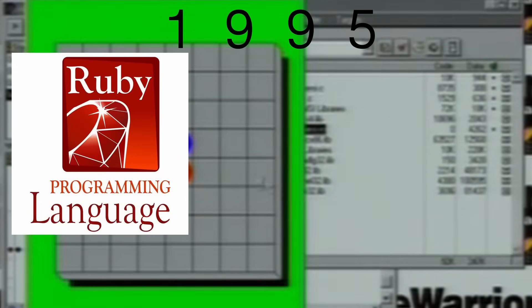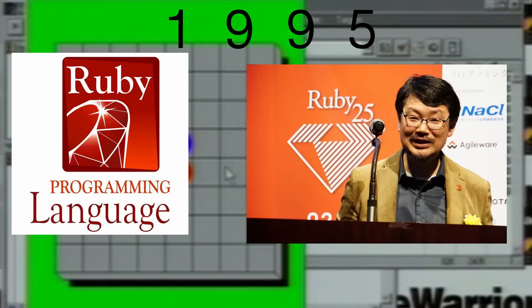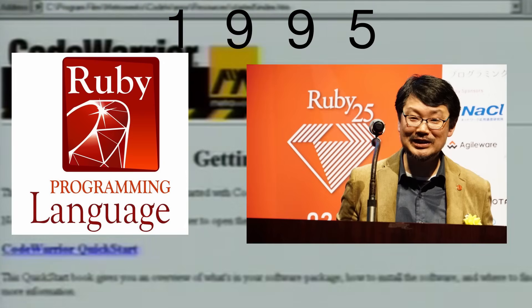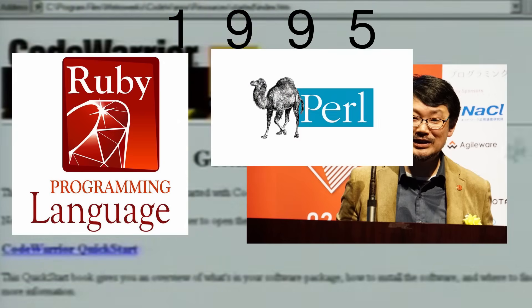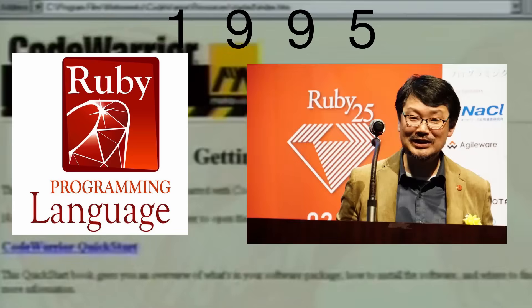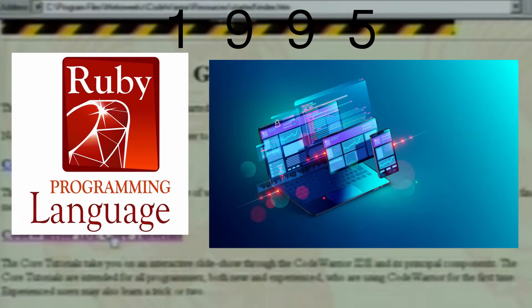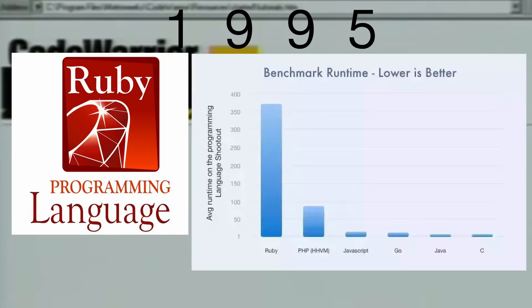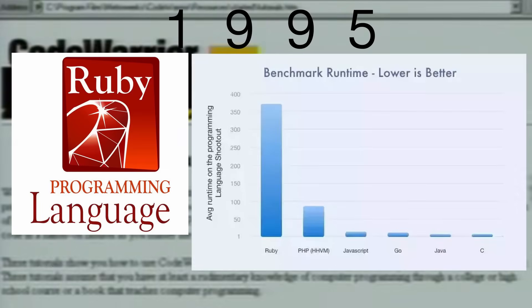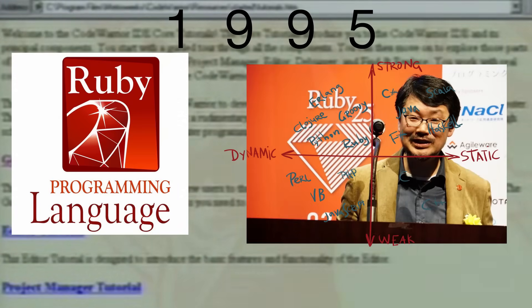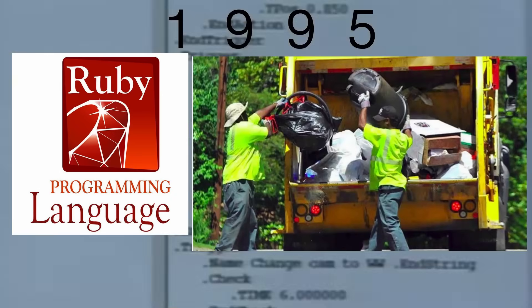Next on the 1995 train is Ruby, created by Yukihiro Matsumoto. Ruby combines Matsumoto's favorite aspects from various other programming languages like Perl, Smalltalk, Basic, and Lisp. Like PHP, Ruby is most commonly found in web development software stacks, yet Ruby runs slower compared to other web development languages. Ruby also features dynamic typing and garbage collection.